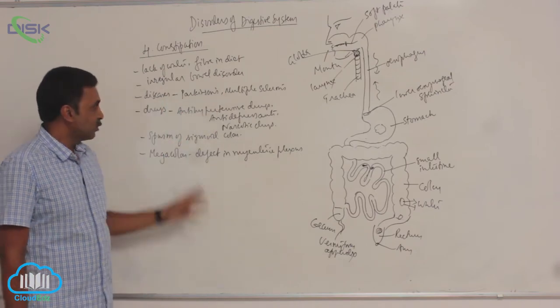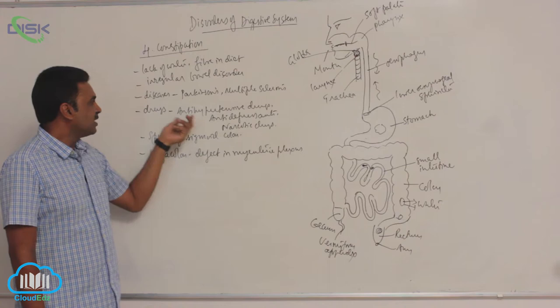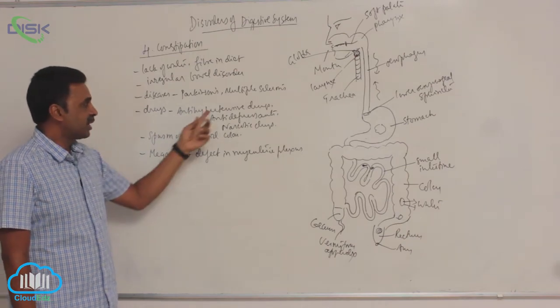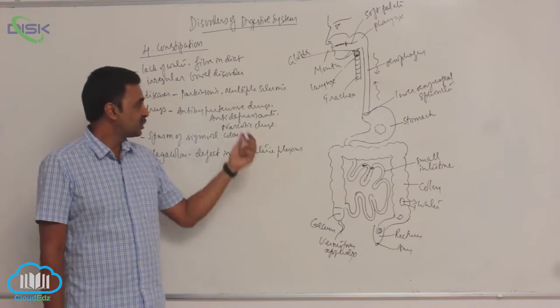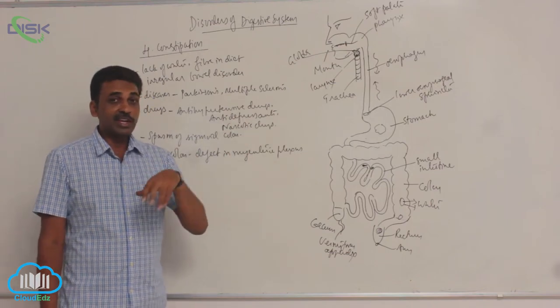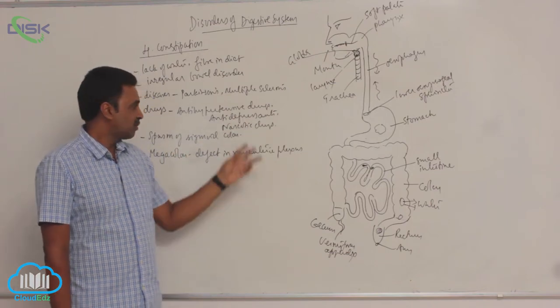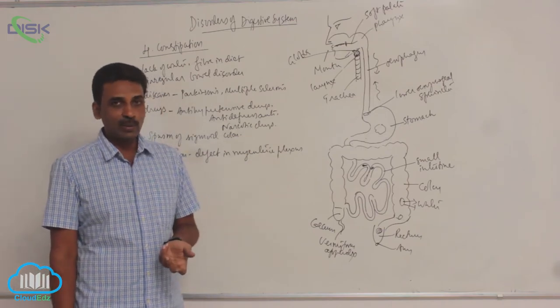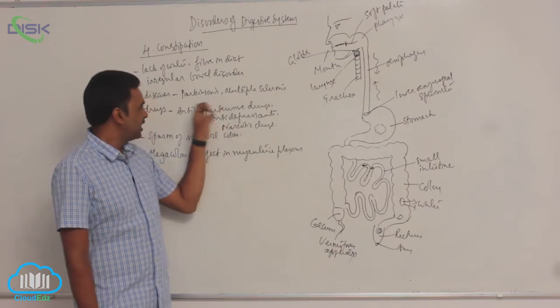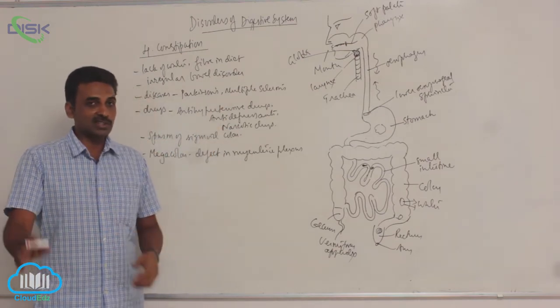Certain drugs also cause constipation: drugs that we take to reduce hypertension, drugs to reduce depression, and certain narcotic drugs. Narcotic drugs are called psychoactive drugs. When these drugs are taken, there is constipation.